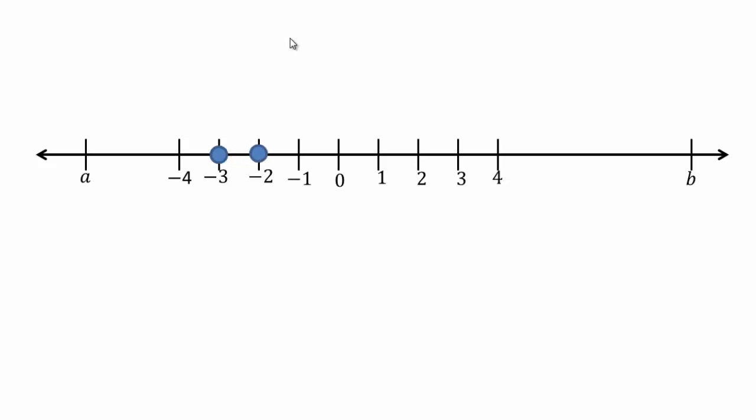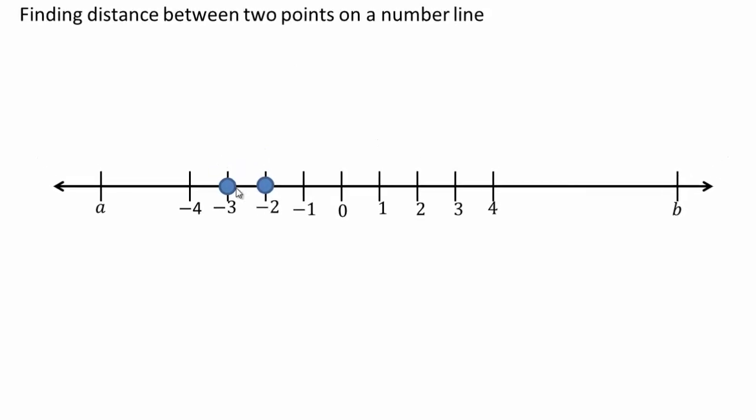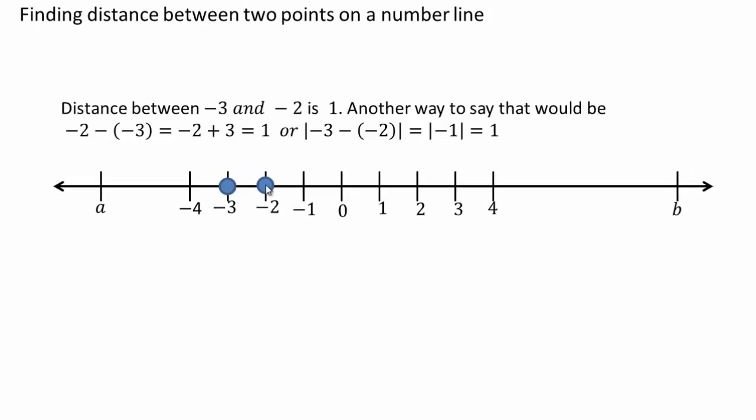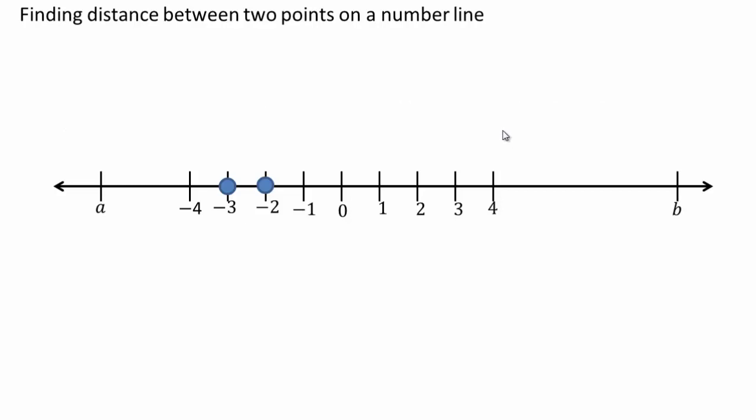So if I go from negative three to negative two, I've moved a distance of one. To compute that algebraically, since negative three is smaller than negative two, you take the bigger number minus the smaller number, which gives you one. Or you can take the difference of the two numbers and use absolute value to ensure distance is always positive. Absolute value of the difference between two points gives you the distance between them.